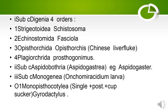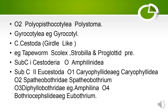Order 4: Plagiorchiida — example: Prosthogonimus. Subclass Aspidobothria — example: Aspidogaster. Subclass Monogenea: Onchomiracidium larva is present. Order 1: Monopisthocotylia — example: Gyrodactylus. Order 2: Polyopisthocotylia — example: Polystoma. Order 3: Gyrocotylia — example: Gyrocotyle.